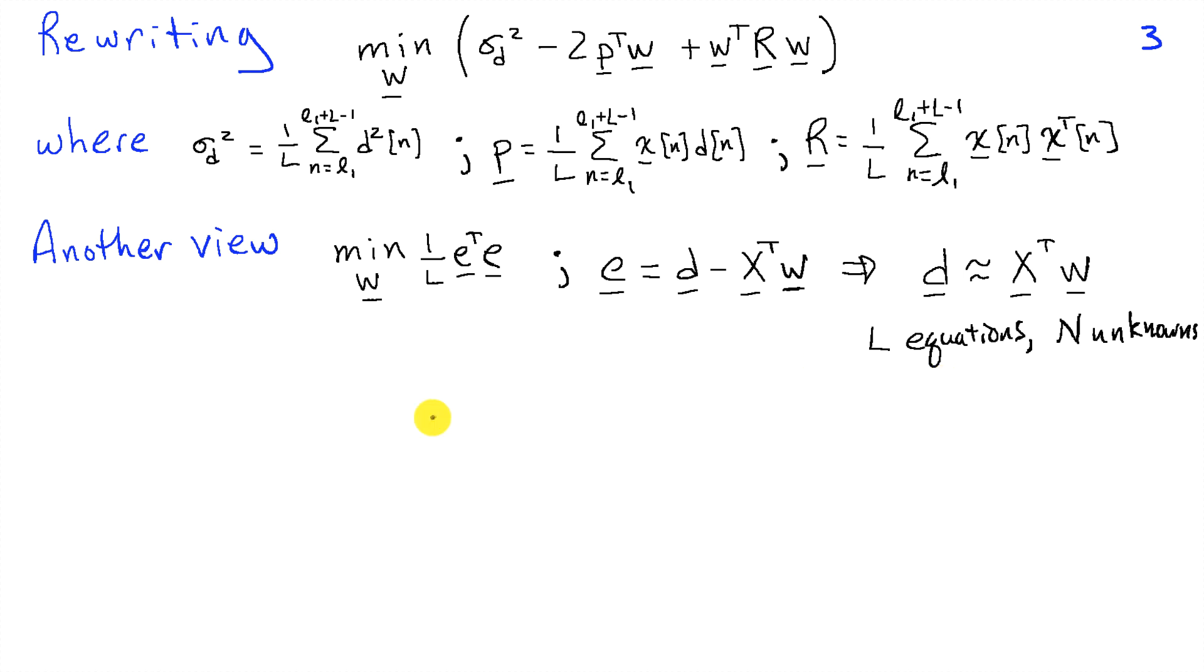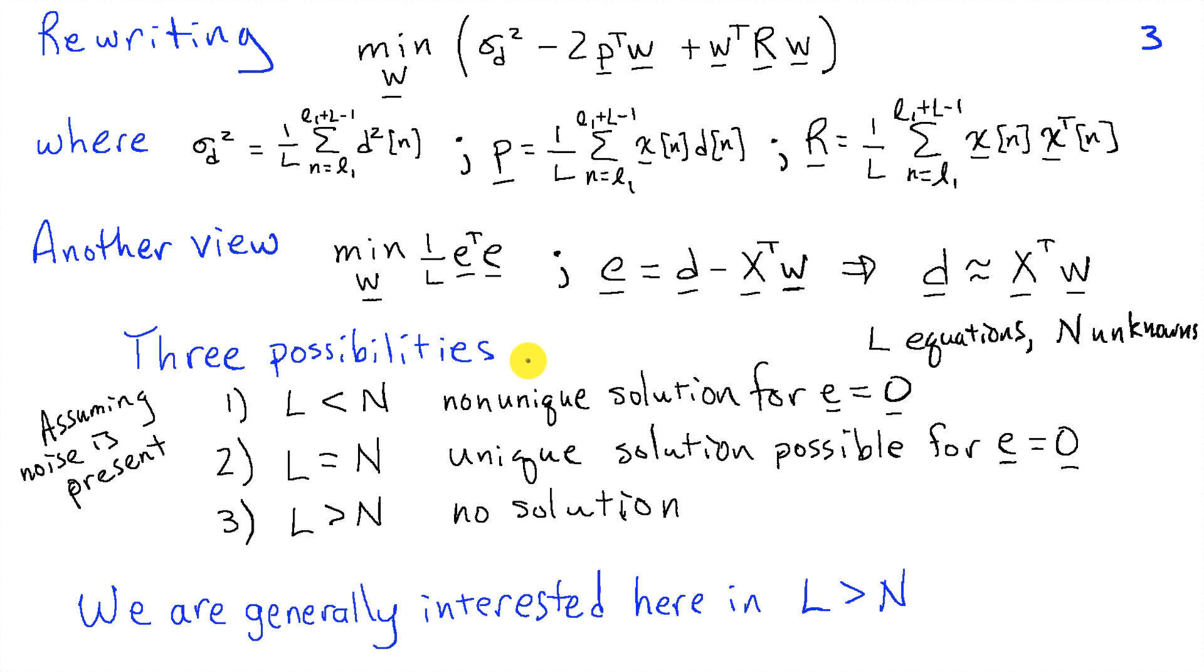So before we go about solving for W, I want to think about this problem slightly differently. We know that the vector E is the vector D minus X transpose W. So what I'm trying to do when I minimize E transpose E is have X transpose W be approximately equal to D. So I can think about this as a system of linear equations. I have L equations with N unknowns. So what we know about solving system of linear equations is pretty extensive.